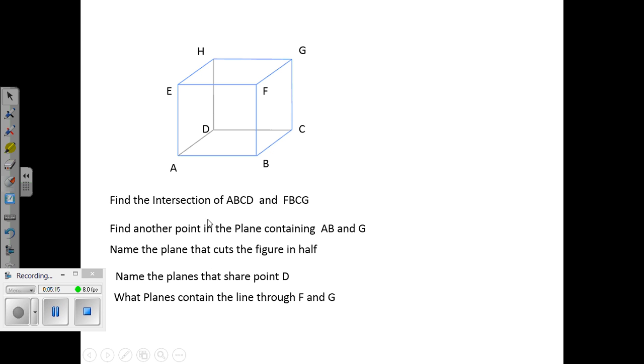A plane that cuts the figure in half. Well, you can cut it diagonally with the plane HDBF. Think about another plane that you might use to cut it diagonally. Name the planes that share point D. Okay, well, point D is where three planes intersect. It's a corner. It's a corner of a room. It's where three planes intersect.